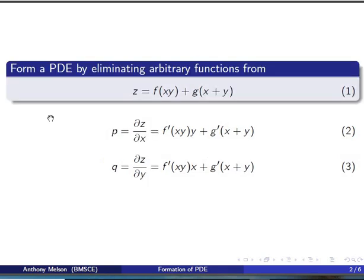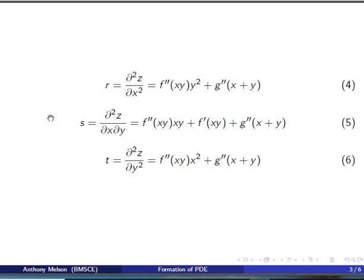Now if we look at equation 2, the first term is f'(xy)·y. When we find ∂²z/∂x∂y we need to apply product rule when differentiating f'(xy)·y. Therefore we have two terms in equation 5, that is f''(xy)·xy plus f'(xy), which is a result of the product rule.